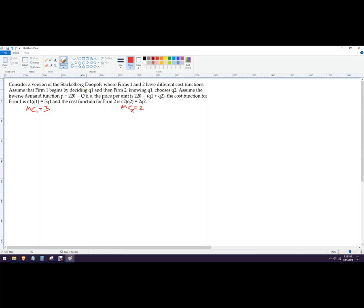Now we have the inverse demand function. What it is, it's 220 minus Q. Now this big Q is actually the combination of both firms' production. So it would be both of these firms together, minus Q1, minus Q2.